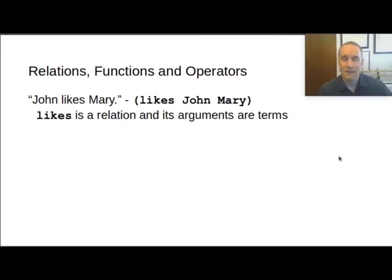So John likes Mary. Likes is a relation, and the arguments to that relation are terms. And then this relation is a sentence, and the sentence has a truth value. So one more time. John likes Mary is a sentence. The arguments of this sentence, arguments to the relationship likes, are John and Mary. They are terms, and the overall thing has a truth value. Either it's true or it's not true.